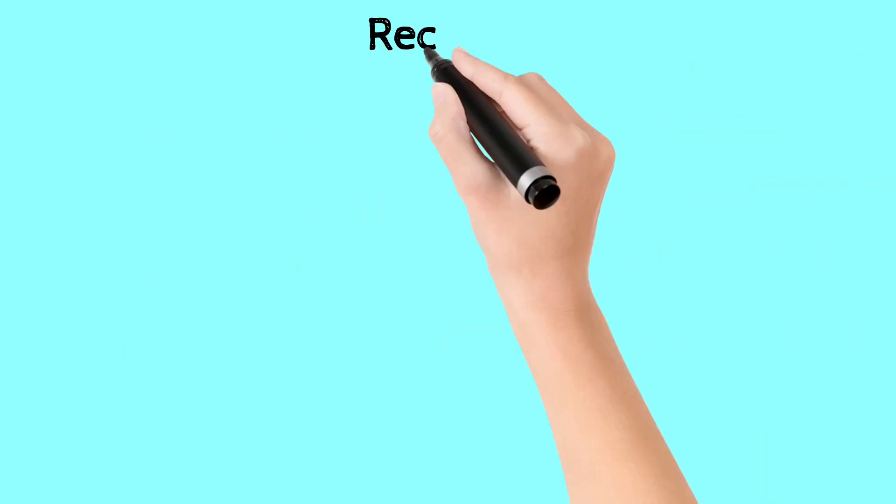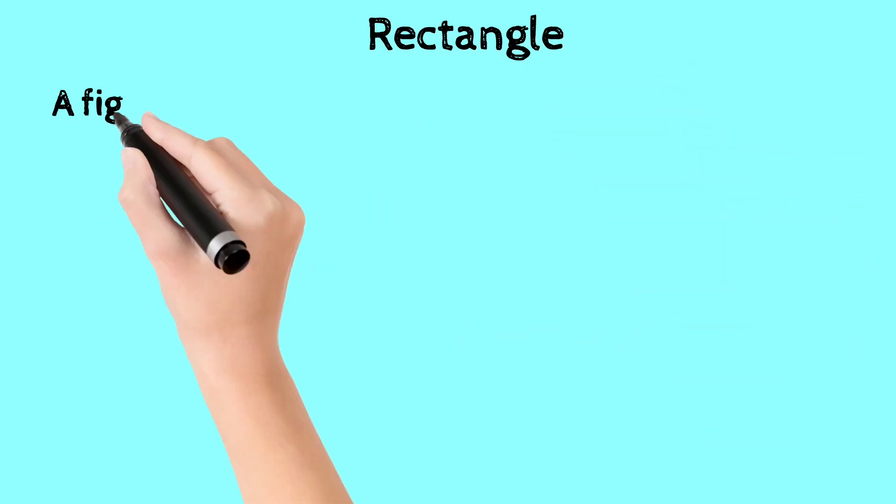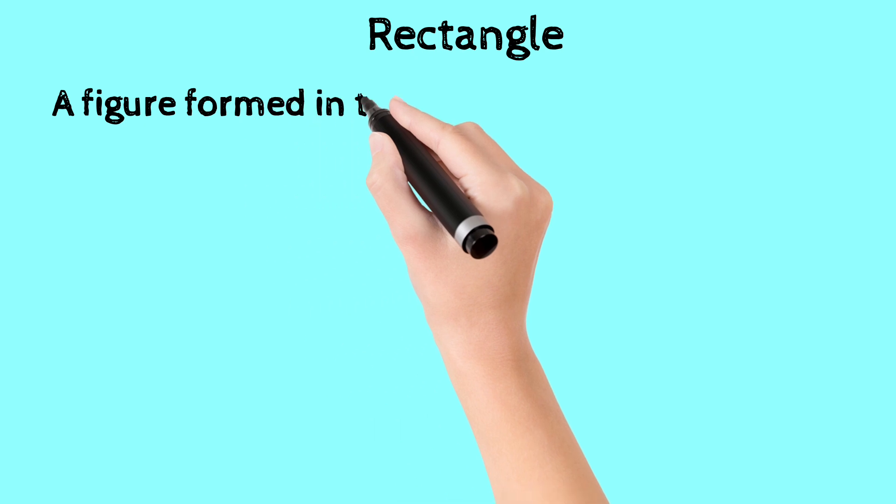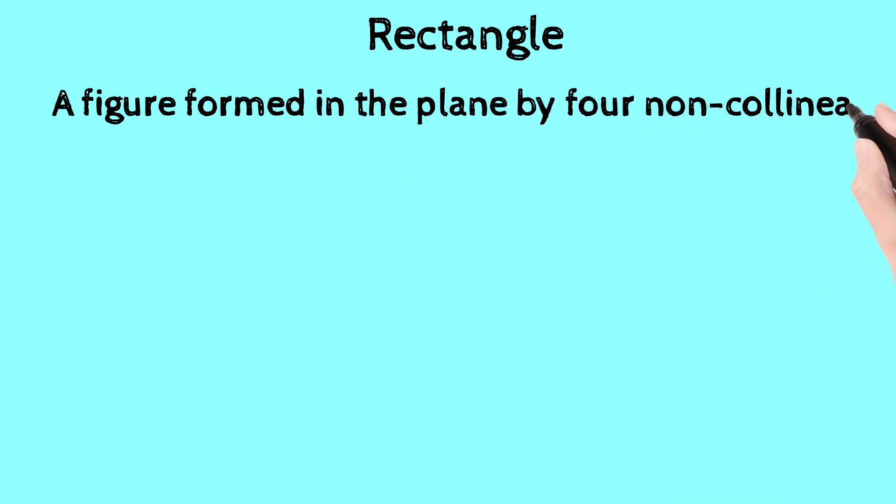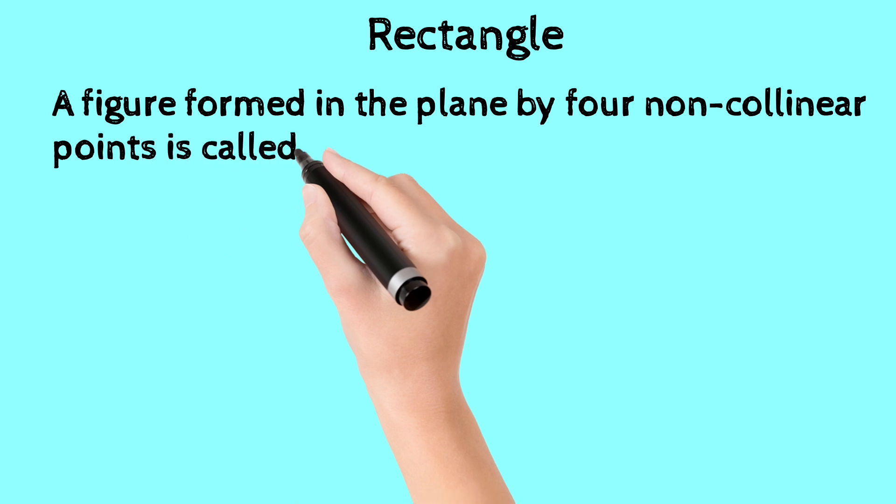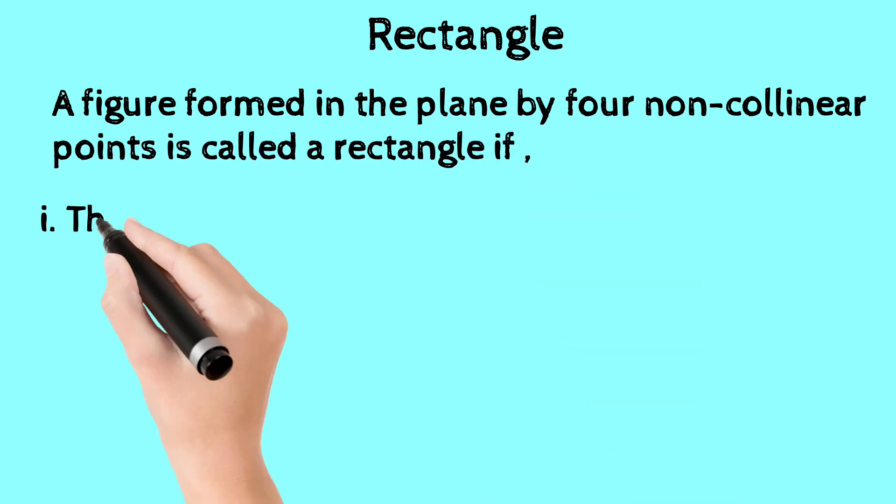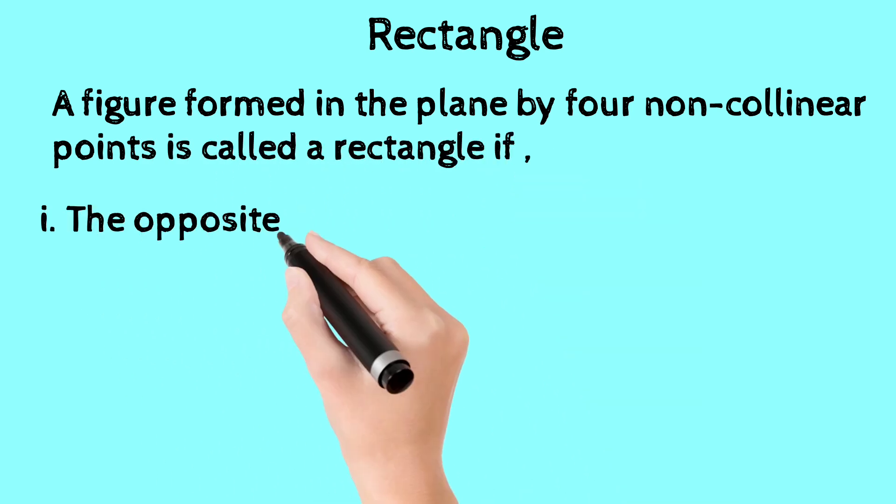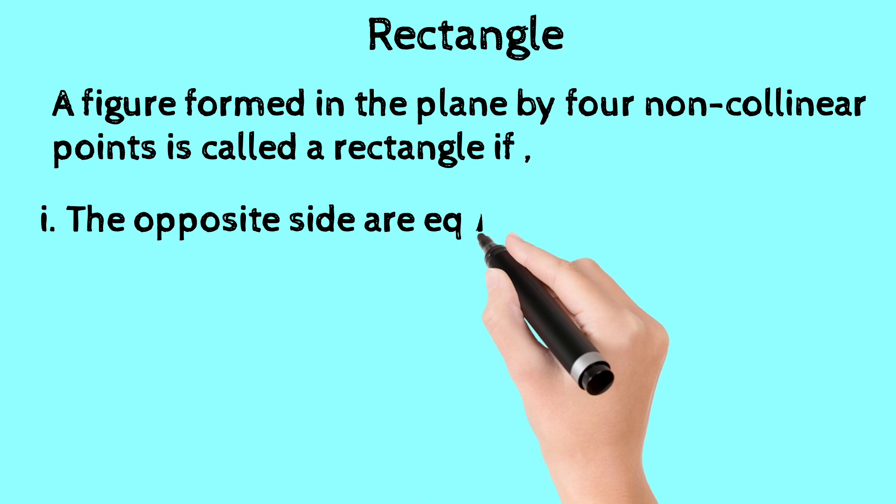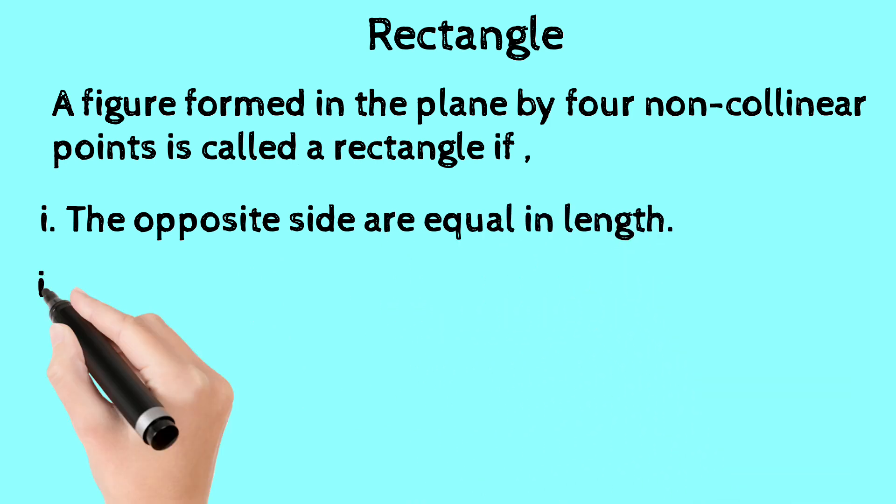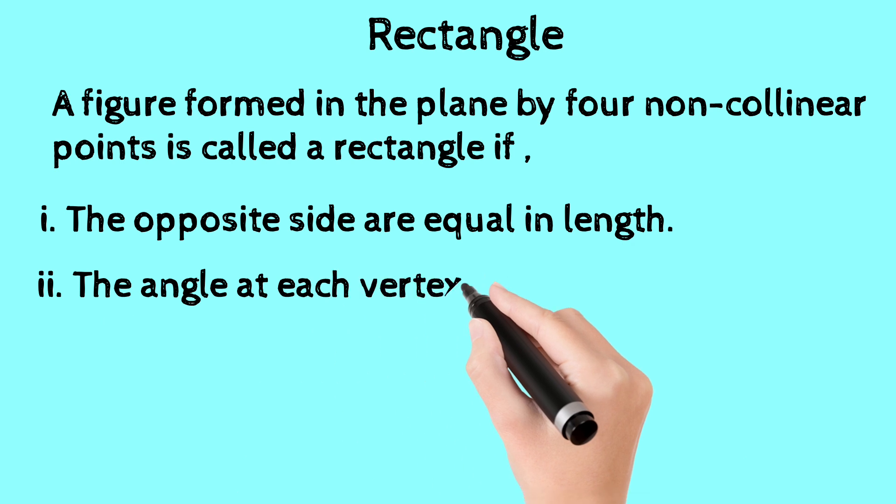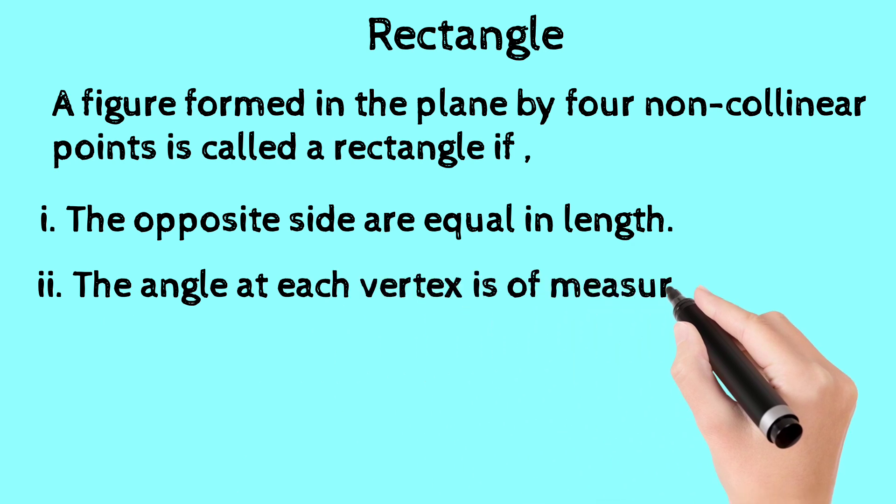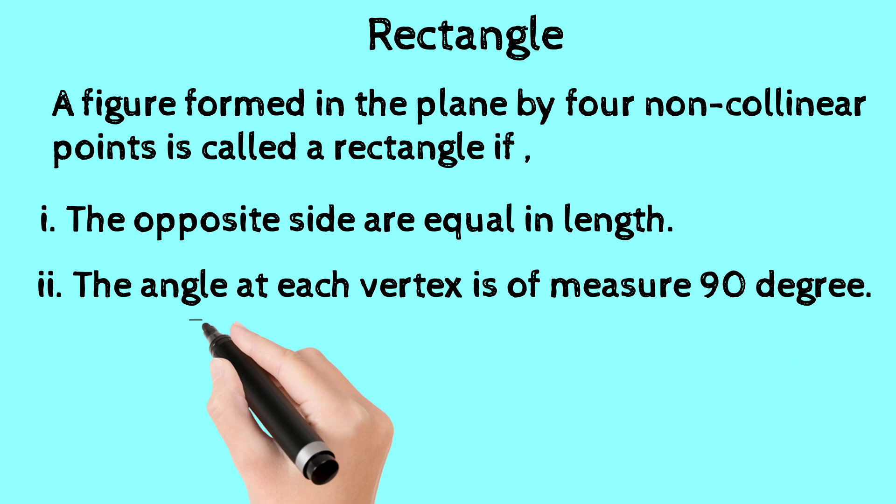First of all, see the definition of a rectangle. A figure formed in the plane by four non-collinear points is called a rectangle if the opposite sides are equal in length and the angle at each vertex measures 90 degrees.